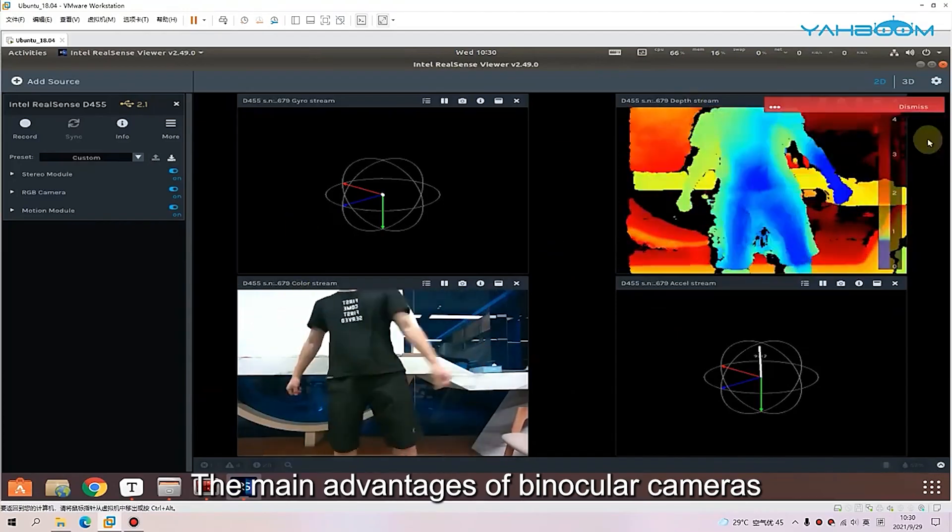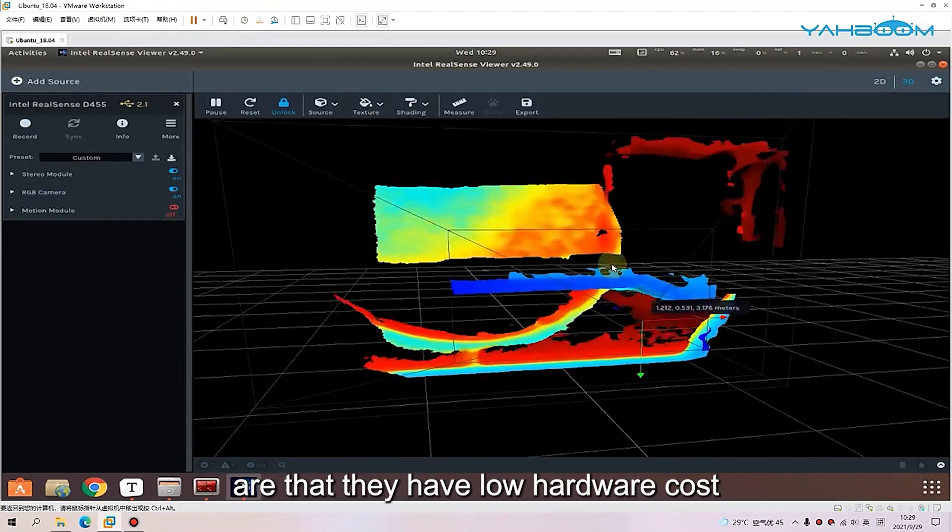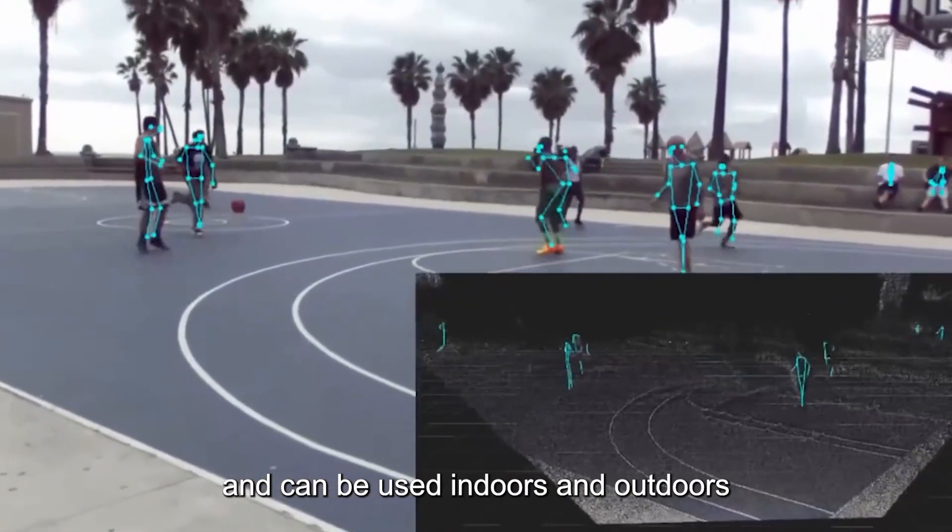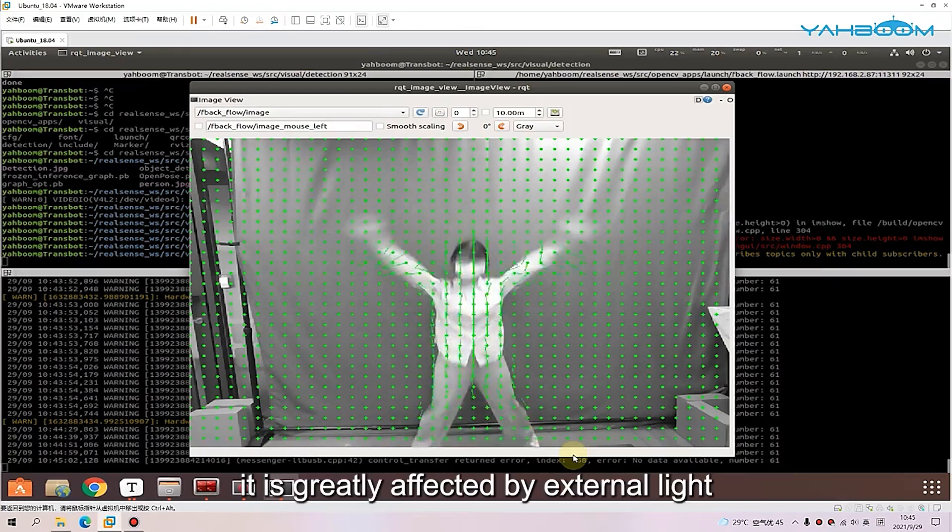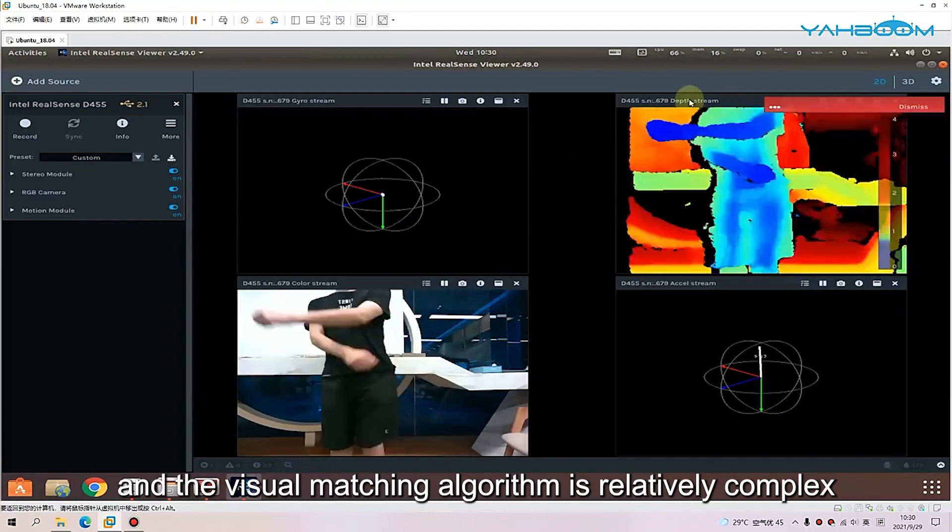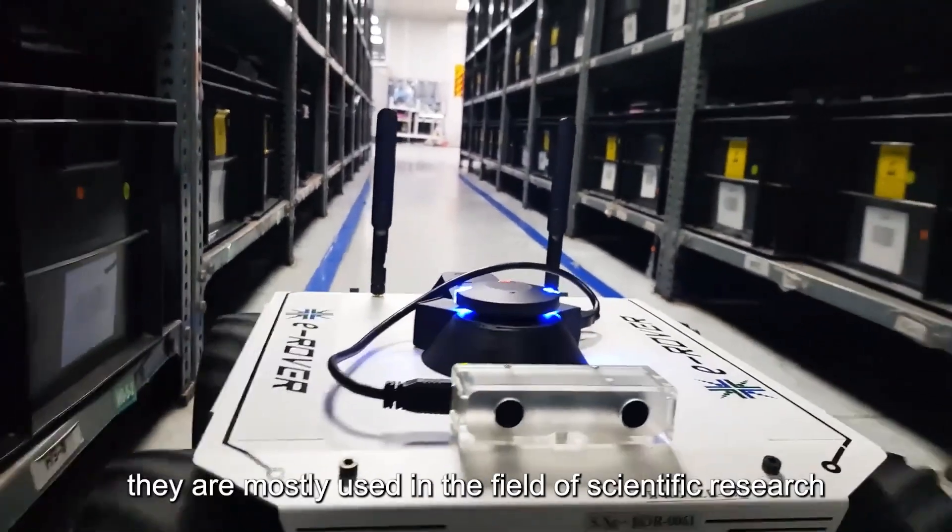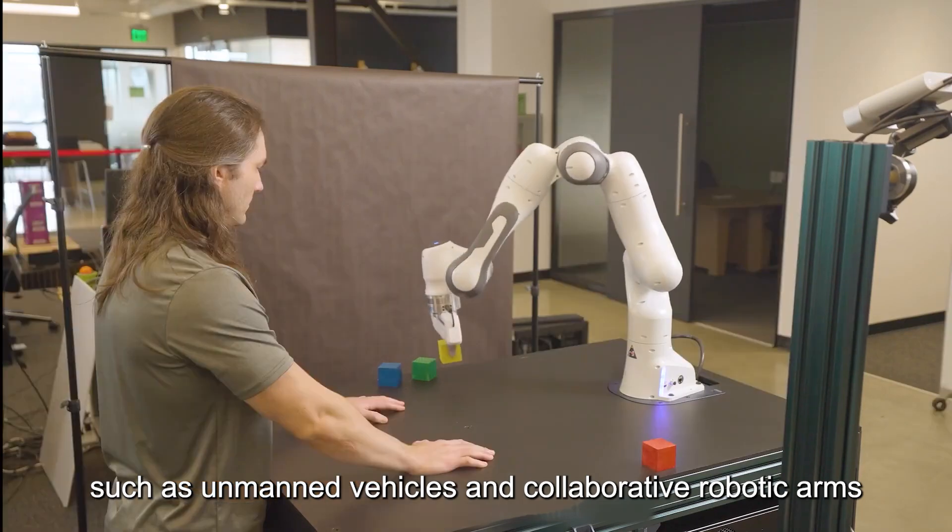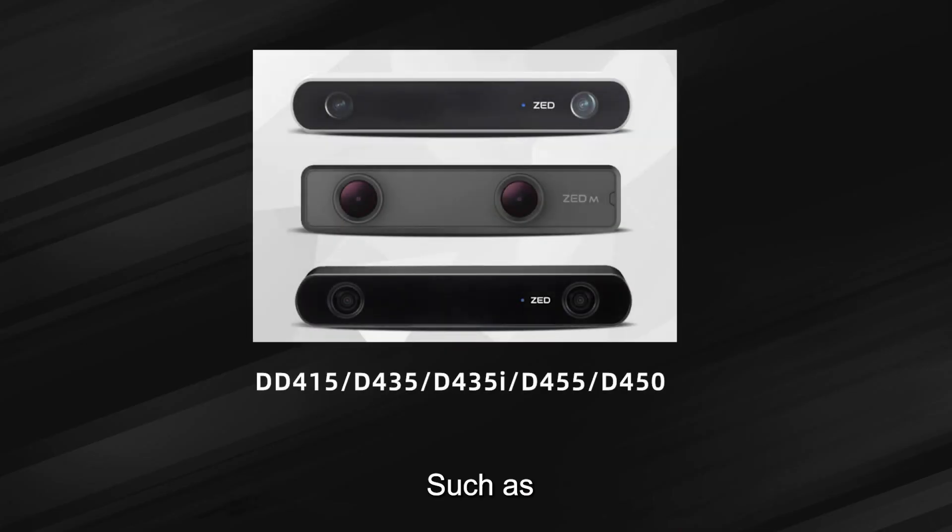The main advantages of binocular cameras are that they have low hardware cost, rely on natural light, and can be used indoors and outdoors. However, it is greatly affected by external light, and the visual matching algorithm is relatively complex. Currently, they are mostly used in the field of scientific research, such as unmanned vehicles and collaborative robotic arms, such as Stereolabs ZED series.